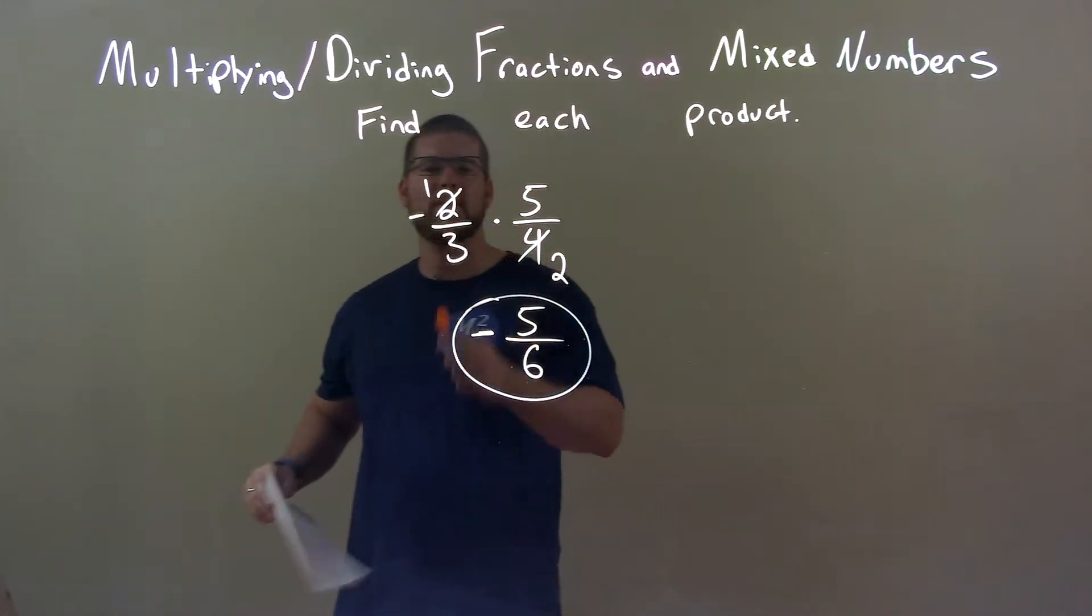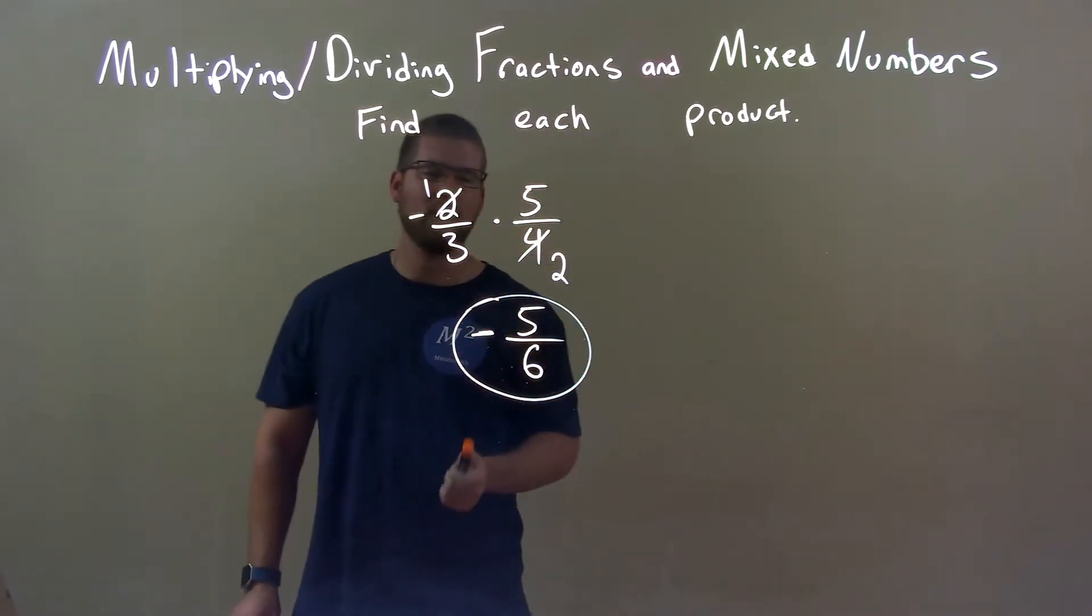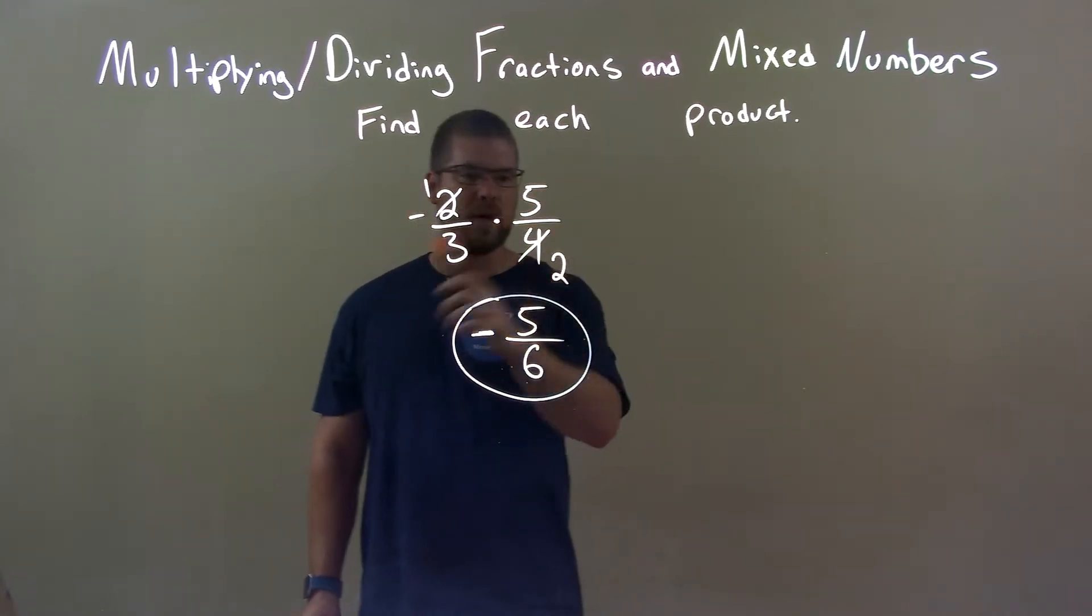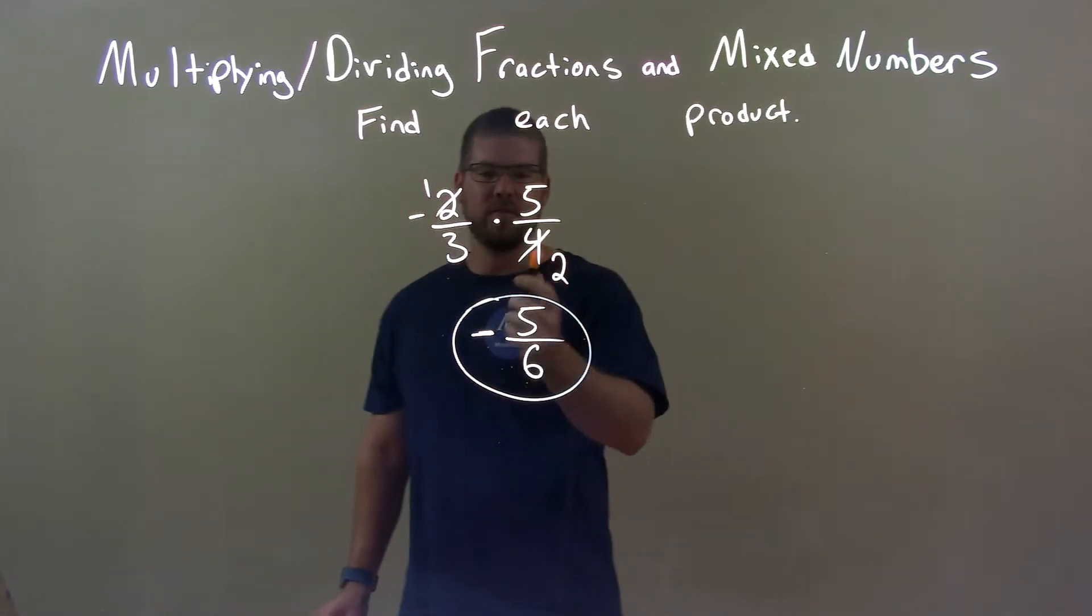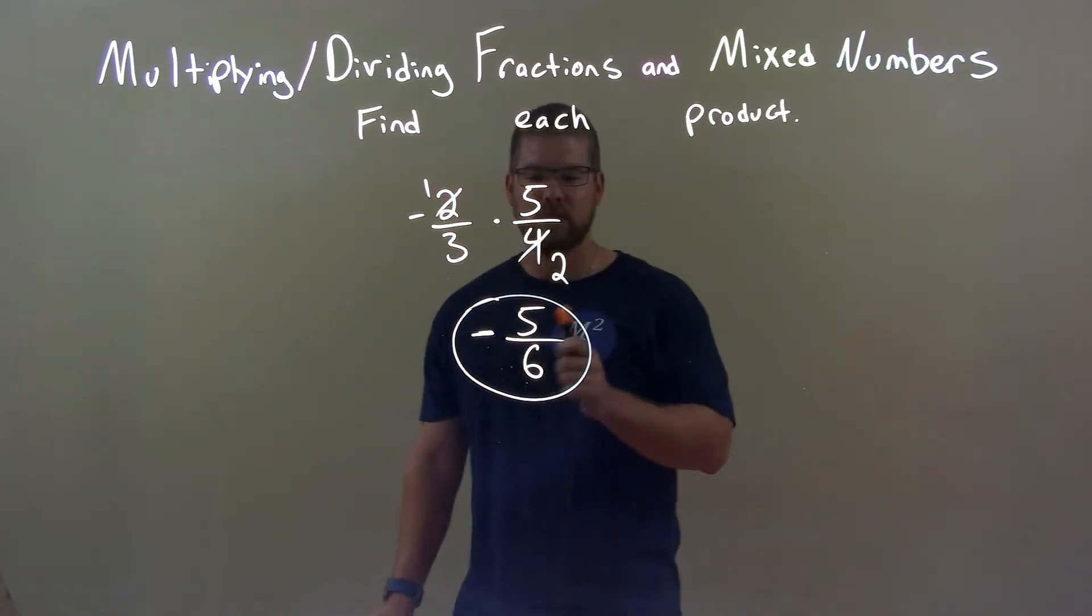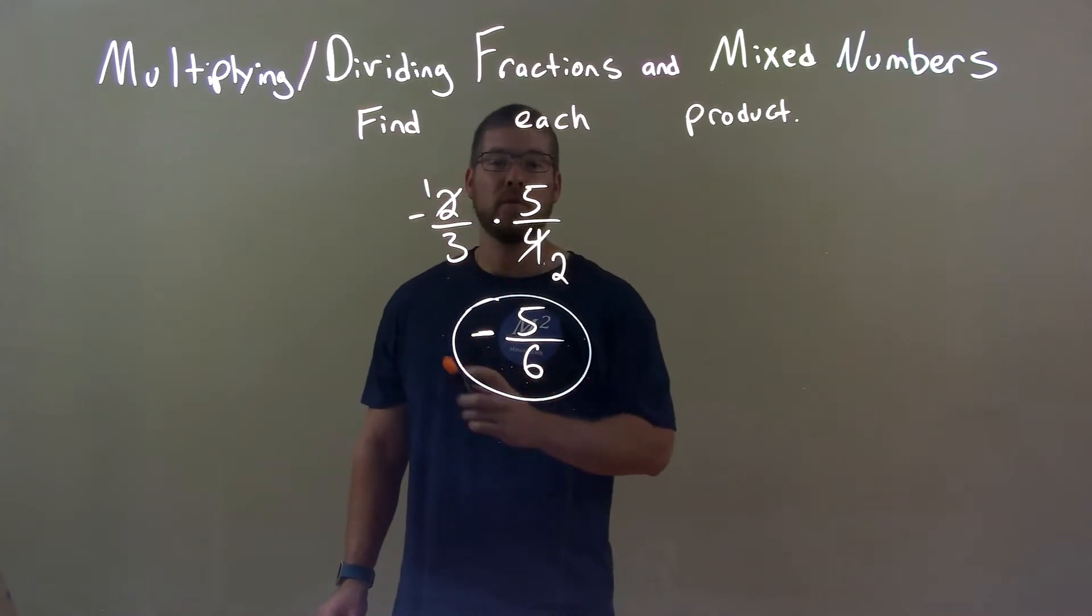Quick recap. We're given 2 thirds times 5 fourths. Well, the 2 and the 4, we can simplify to be a 1 and a 2. Then we multiply across the numerator and multiply across the denominator. That gave us our answer of 5 sixths, but we have a negative times a positive, which is a negative. So again, final answer, negative 5 over 6.